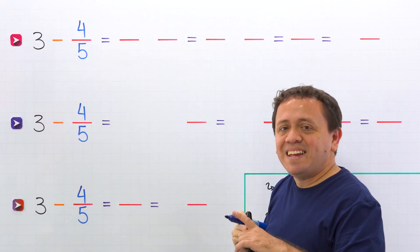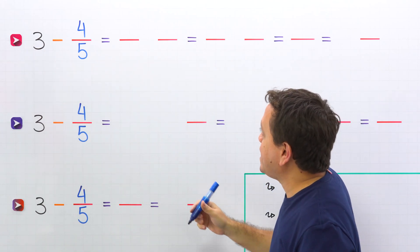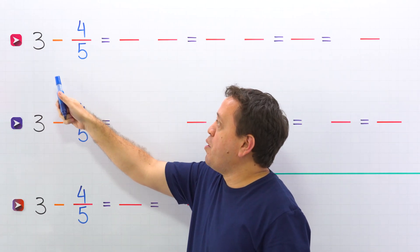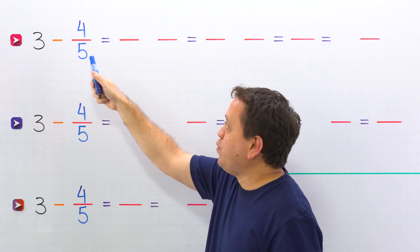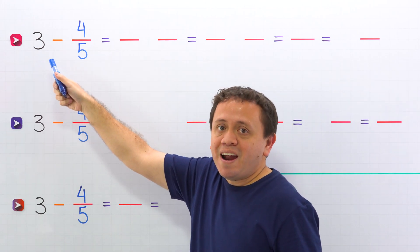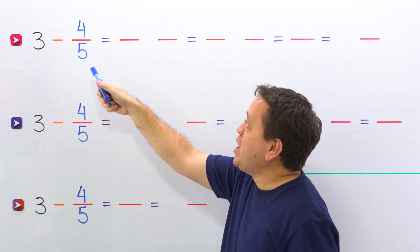Let's start with the first method. This is the classical method, and we will use an example: 3 minus 4 fifths. We have a whole number and a fraction.